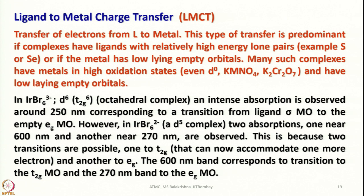In case of MLCT, the metal should be in a lower oxidation state so that it is electron rich. In case of LMCT, the metal exists in higher oxidation states and has very few electrons in its d orbitals. For example, KMnO4 (potassium permanganate) or potassium dichromate have zero electrons in their d orbital, and LMCT is responsible for the intense color of these compounds.